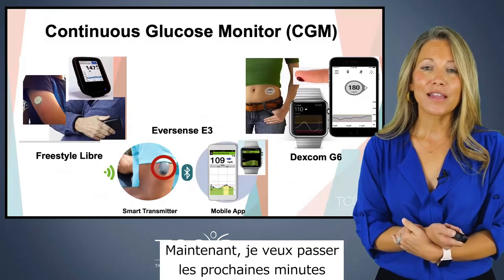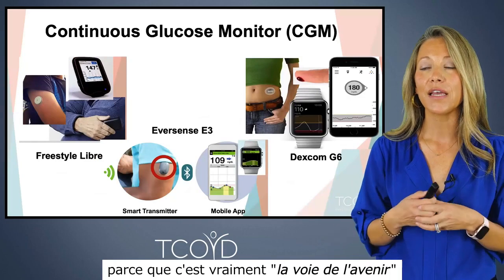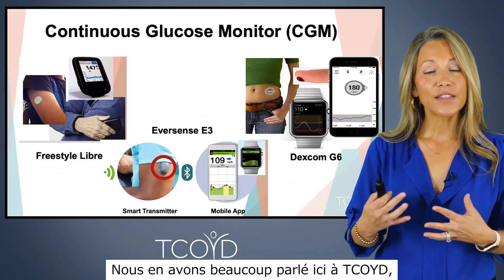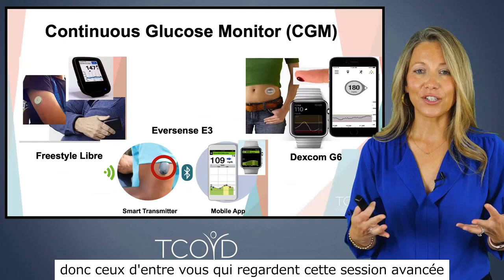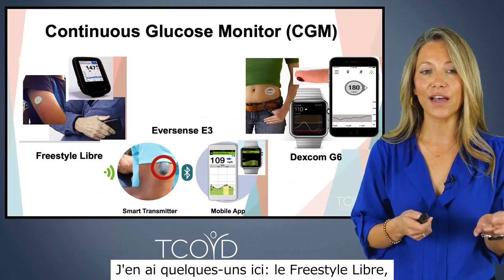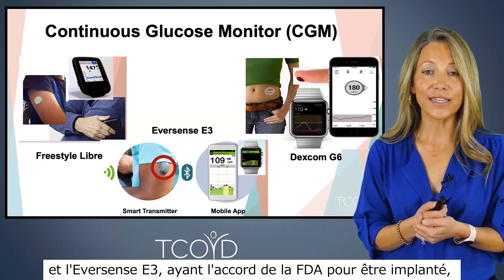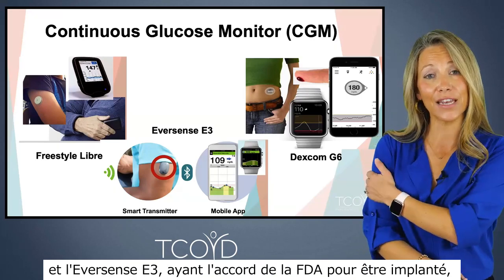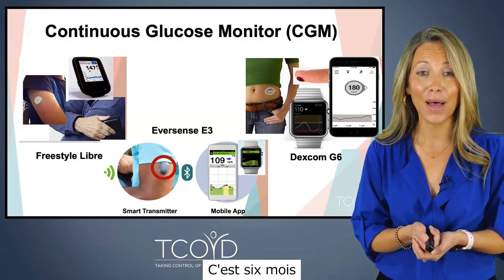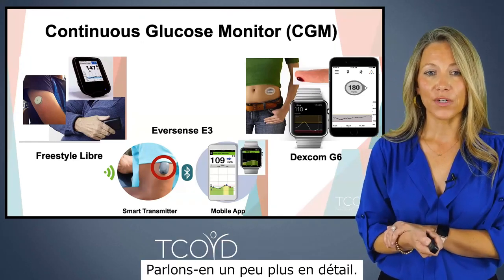Now I want to spend the next several minutes talking about continuous glucose monitors. This is a big part of this talk because it's really the wave of the future for people with type 2 diabetes. Those of you in this advanced session have probably heard about them in other sessions. We have the Freestyle Libre, the Dexcom G6, and the Eversense E3, which is now FDA approved to be implanted — an implanted continuous glucose monitor for 180 days, or six months, where you don't have to think about putting a new one in.